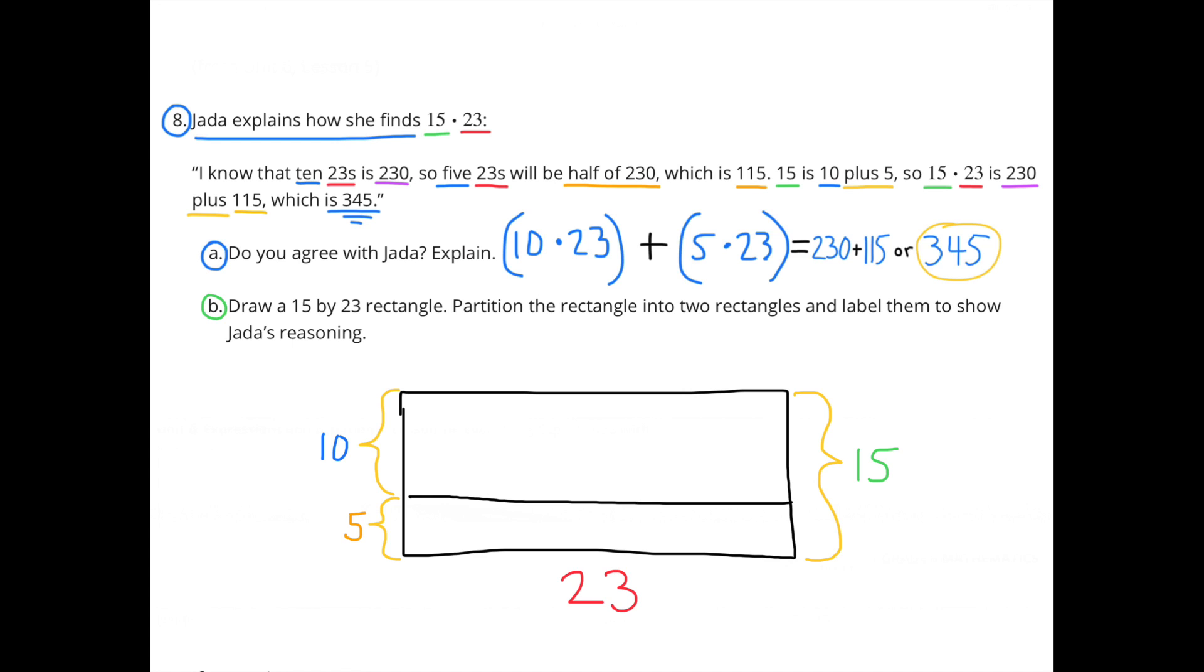The rectangle on top is 10 by 23, and the rectangle on the bottom is 5 by 23. So 10 by 23 plus 5 by 23 would equal 15 by 23.